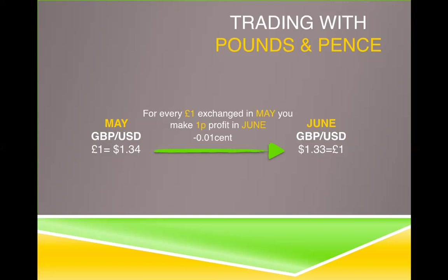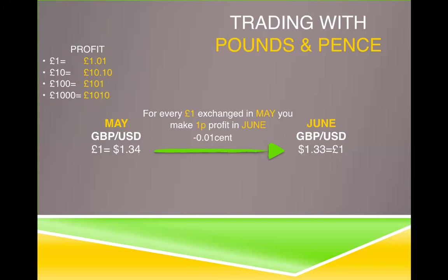For every pound exchanged in May, when you exchange it back in June, you would make that one cent profit for every pound. If you spent a pound in May and changed it in June, you'd have one pound one pence. If you spent 10 pounds, you'd have 10 pounds 10 pence. If you spent 100 pounds, you'd have 101 pounds — one pound profit. If you changed a thousand pounds, you'd have made 10 pounds profit. You can't make much unless you have like a million to change, and obviously many of us don't have that kind of money. That's why Forex is here.